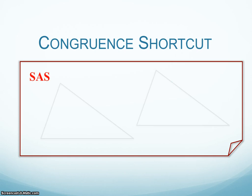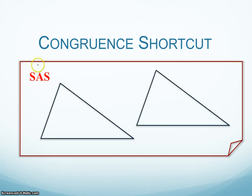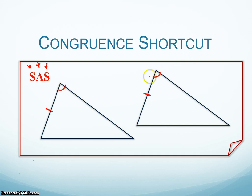The next congruent shortcut is side-angle-side, SAS. This means if we have an angle that is between two sides that are congruent, then we know that the triangles are congruent. So if I have two separate triangles and I know that this side is congruent to this side, and then this angle is congruent to this angle, and then another side such that the angle is sandwiched between the two sides — a side, an angle, and then immediately after another side — and they're corresponding.